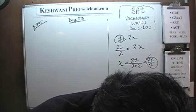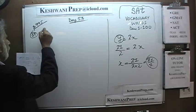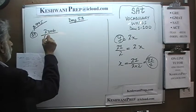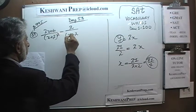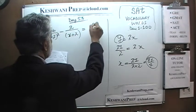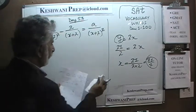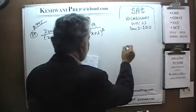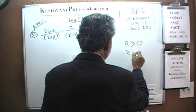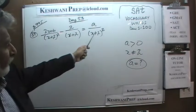Number 19 is on the next page. This time we have a rational equation: 2 over (x plus 2) minus a over (x plus 2) squared, and we are told that x has to be positive and x cannot equal negative 2. The question simply is: what is the value of a?